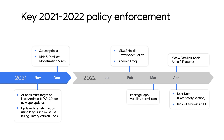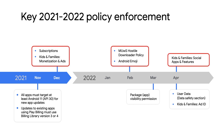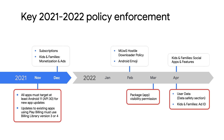And lastly, let's take a look at some key enforcement dates. On the top, you see deadlines from the policy updates we talked about today. We've extended the grace period for changes that may take developers more time to adjust to, such as the kids' and families' social apps and features, and Android Emojis update. On the bottom, you see deadlines from our previous policy updates. One to point out is that by November 1st, all updates to existing apps using Play Billing must use Billing Library version 3 or 4.